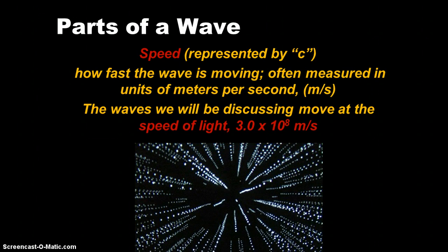Parts of a wave, such as speed here, is represented by C. And that's how fast that wave is moving. I mean, that's speed, that's easy. Now, we measure that in meters per second. And the waves that we'll be discussing will move at the speed of light. And that's 3.0 times 10 to the eighth meters per second there.